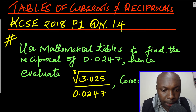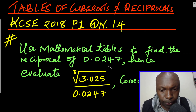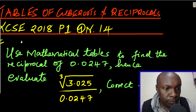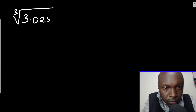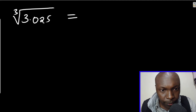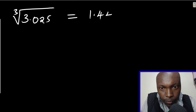To start with, I'm going to split this expression — the cube root of 3.025 divided by 0.0247 — separating the numerator and the denominator. I'll first deal with the cube root of 3.025, which you can read directly from the tables of cube roots. The cube root of 3.025 is 1.4462.